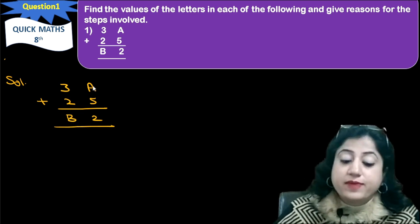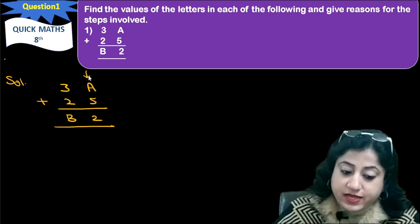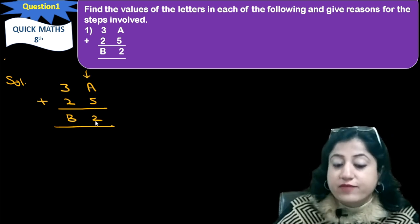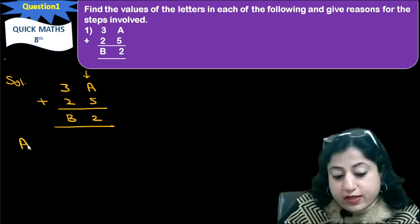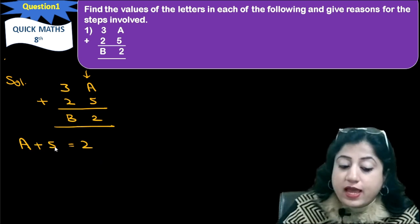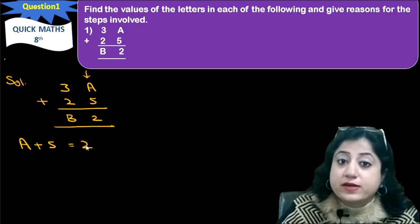Now, first of all, the first one digit is our first column. In this column A, 5 equals to 2. It means we can say A plus 5 must come as 2. So what can we add in 5 that we have 2?